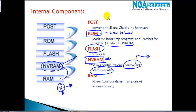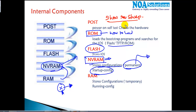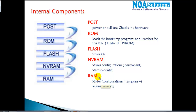NVRAM is called startup configurations because we have a command called 'show startup config' in the command line. We don't have a command called 'show NVRAM' — when you issue 'show startup config', you are verifying what configurations are present in your NVRAM.